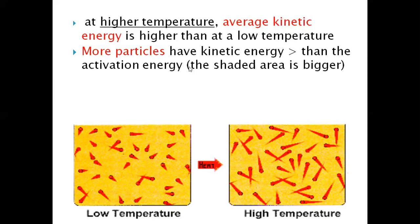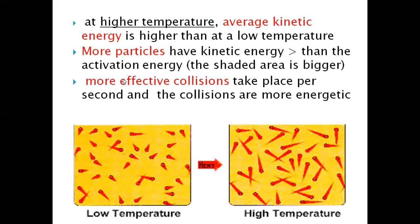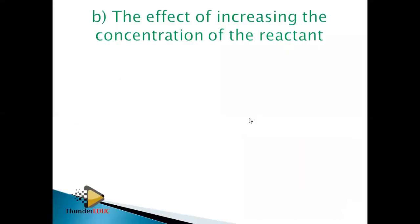At high temperature, more particles have kinetic energy greater than the activation energy. Once the kinetic energy exceeds the activation energy, the reactants are converted into products — more effective collisions take place per second. This means reactants are converted into products more rapidly. Another factor we will look at is the effect of increasing the concentration of the reactants.